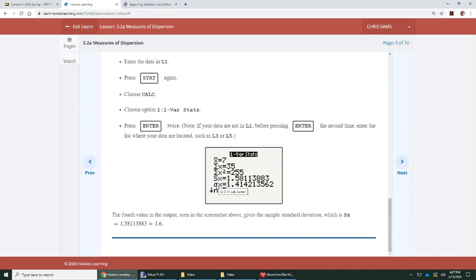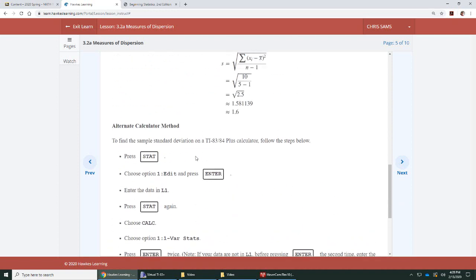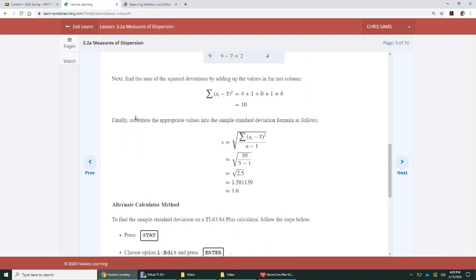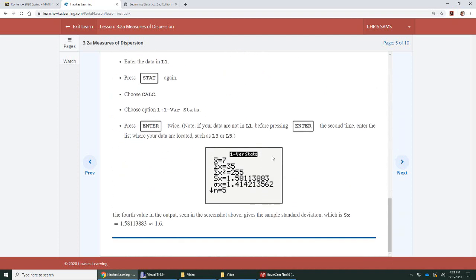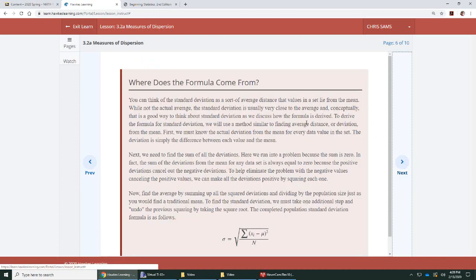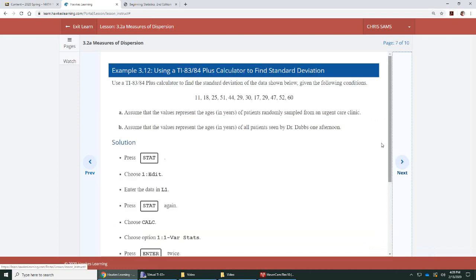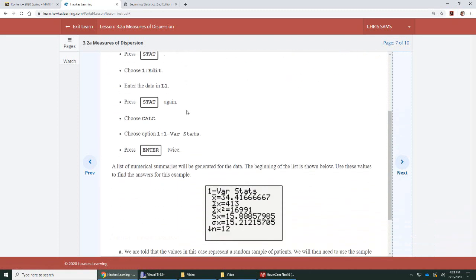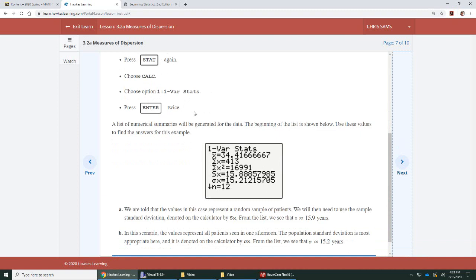Notice, it is showing you Sx. Sx is what they're using for standard deviation. S the sample. The sigma x is what they're using for the population standard deviation. Be aware what the question is asking you for. This one was asking you for sample standard deviation. So, if this was our formula output, we would look at S not the sigma.